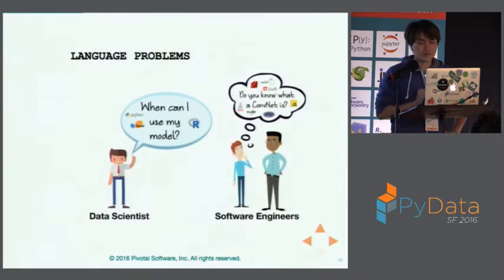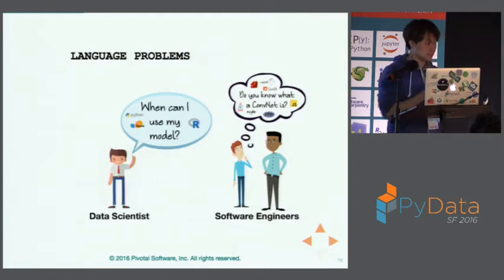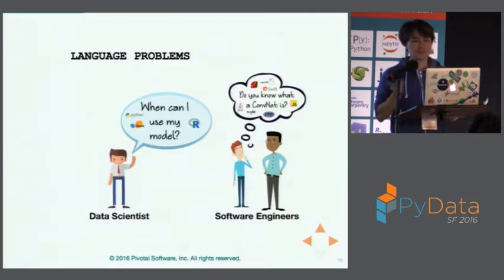So what is the problem — why are models not being put into production? We've seen that data scientists speak different languages: R, Python, or SAS. Whereas software engineers speak Ruby, Swift, or Go. As Peter Wong said in his talk yesterday, data science is not like software engineering, and this is also the case here.